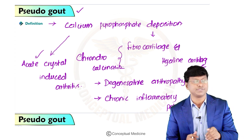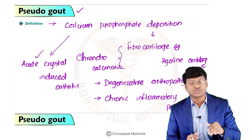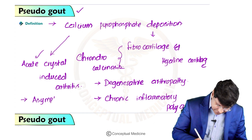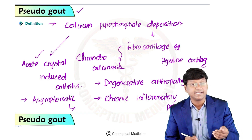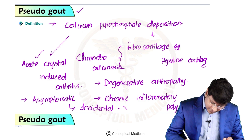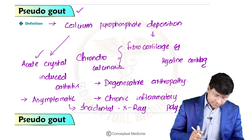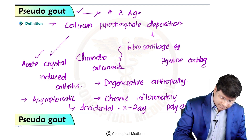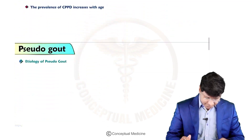CPPD deposition can also be an asymptomatic condition, detected incidentally as chondrocalcinosis on radiographs. If it is asymptomatic, it is detected incidentally on X-rays. The prevalence of pseudogout increases with the age of the individual.